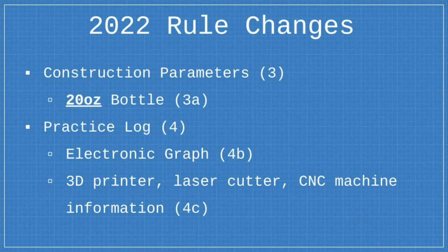In addition to the construction parameters, the practice log section has changed. In addition to a practice log, you have to have an electronic graph described under rule 4b. And this electronic graph has to display data for the peak height of your rocket when you launch it, and the PSI used to launch that rocket.